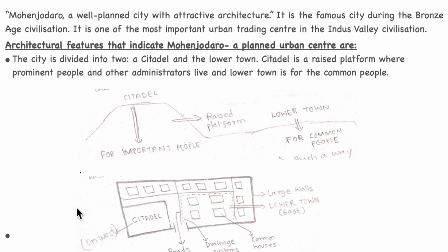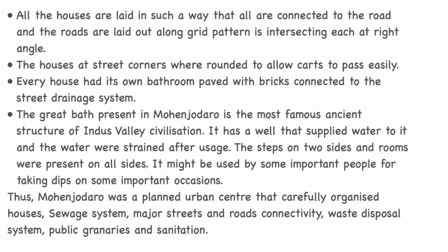The second diagram explains the grid system: the roads, drainage patterns, houses, and citadel layout. All houses are connected to roads, and the roads are laid out in a grid pattern, intersecting each other at right angles.